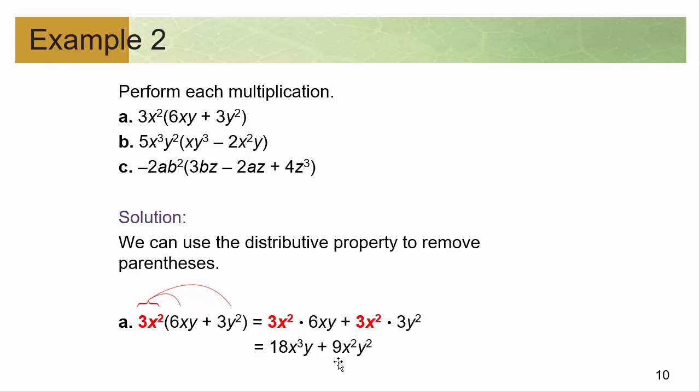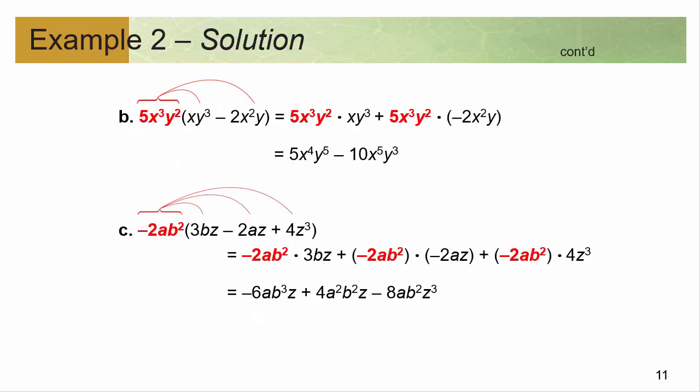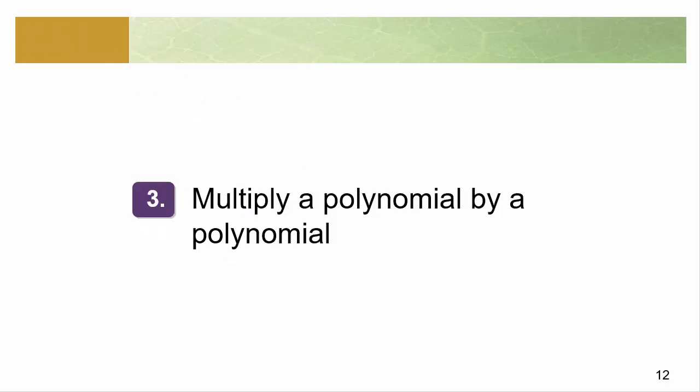Then you do this times the second piece. The 3 times 3 gives you the 9. The x² has nothing to combine with, so it's just x². The y² has nothing to combine with, so it's just y². It's just that simple. It doesn't matter how many examples we do — it's the same thing. You're just distributing through. All we're doing is the distribution rule: distributing multiplication across multiple things.